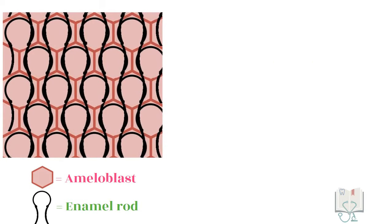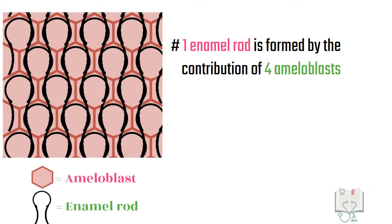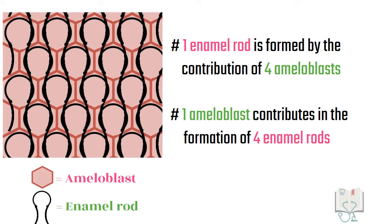With this arrangement, it is observed that each keyhole shaped rod is formed by the contribution of four ameloblasts. And each ameloblast contributes in the formation of four enamel rods.